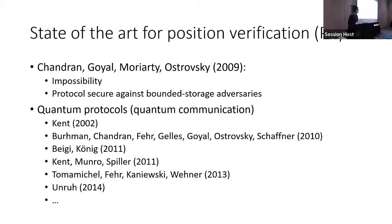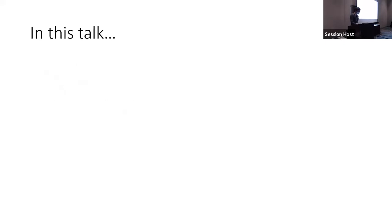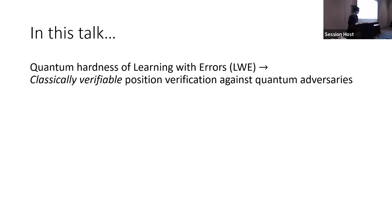There is a long line of work studying position verification in the quantum setting. It turns out that using quantum communication you can get around the impossibility. In our work, we provide a twist on this line: we achieve classically verifiable position verification against quantum adversaries, assuming the quantum hardness of Learning With Errors (LWE) — the standard lattice cryptographic assumption that was discussed in Sunday's tutorial.